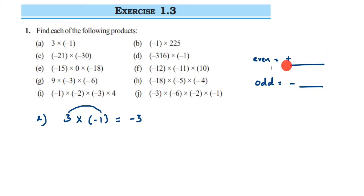Now let us look at the second one: minus 1 into 25. Same as the first question — we have one negative sign, so the final answer is going to have a negative sign. 1 into 25 is 25, so the answer will be minus 25.